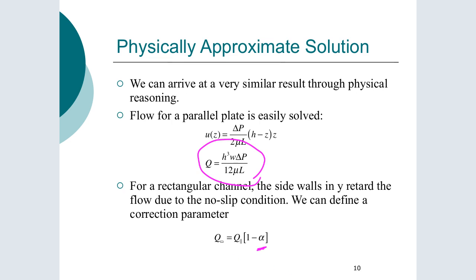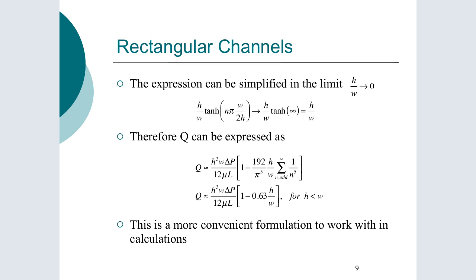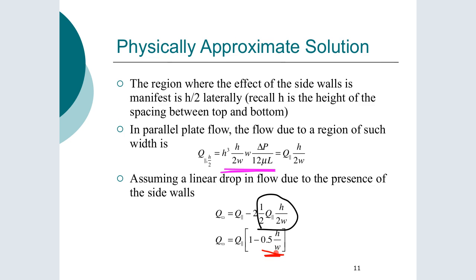Okay so it drops off, decays linearly and if you assume that you end up with a correction factor of one minus 0.5 h over w. It turns out that that's not a bad approximation to it so we have a solution that's of the same form as what we had before. Before we were getting 0.63 h over w and now we're getting 0.5 h over w. If you modify this and you say that okay linear is just a first order approximation, it's not physically what goes on and if you look at the velocity profile in parallel plate it's parabolic. So if you assume that there actually is a parabolic decay of velocity due to the presence of the sidewalls you can improve on this and you can get it to be 0.66 instead of 0.5.